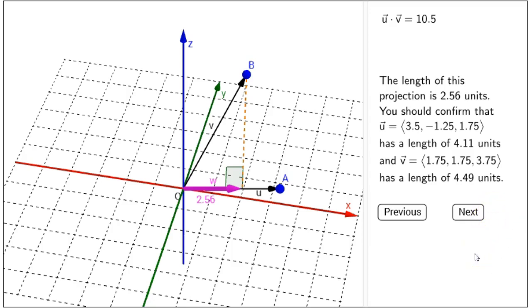Well, how are these lengths related to each other? Well, it turns out that the length of the projection times the length of U is the dot product. Can you see how it is in this case?